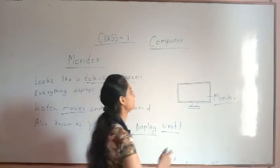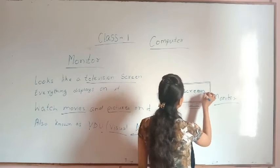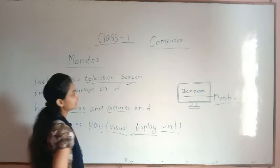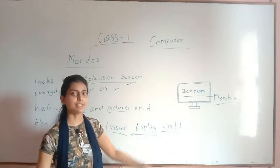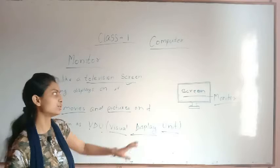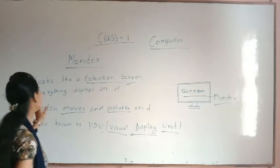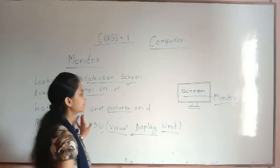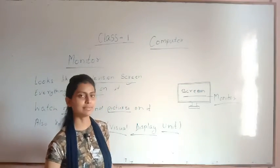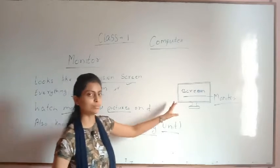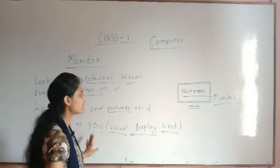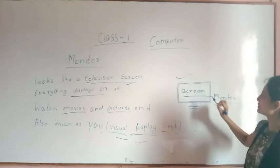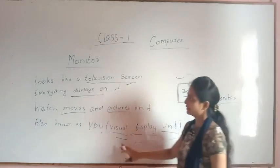Everything you do on the computer will show on the monitor screen. So to recap: first, the monitor looks like a television screen — you have a TV at home, and the monitor looks like your TV. Second, everything displays on it — whatever you do, you will see on the monitor. Third, you can watch movies, pictures, and play games on it. And the monitor is also known as VDU — V for Visual, D for Display, U for Unit.